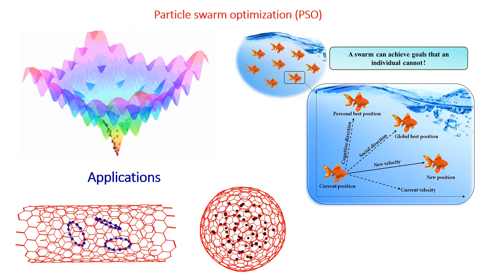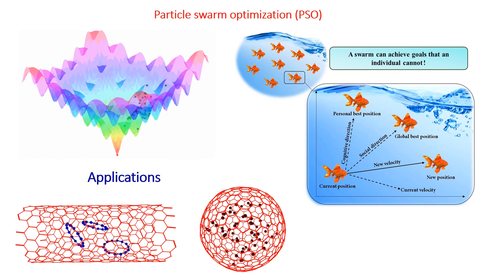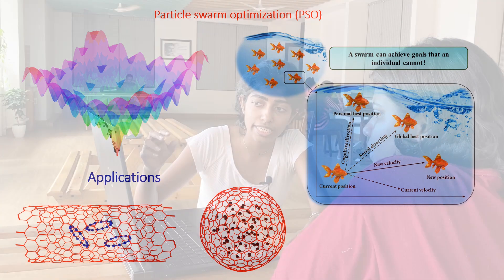I can explain this technique through some animations. As you can see, what we do is we define the surface, then we initialize some particles on the surface. These particles can interact with each other — they communicate with each other and then update their positions. This keeps on happening until all of them get to the global minimum position.